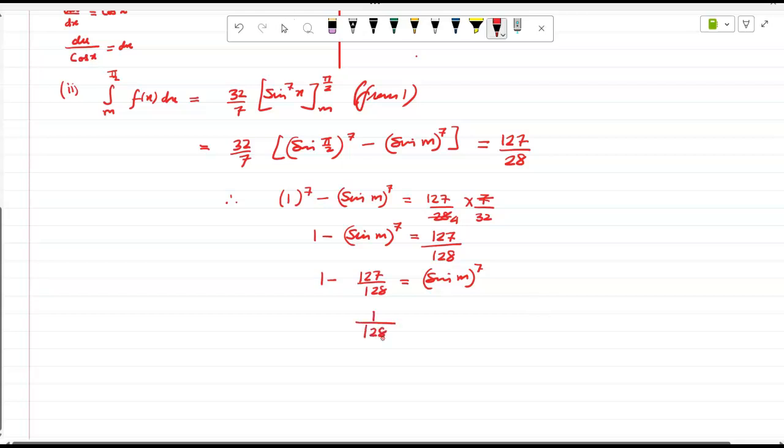Correct, now if you take the LCM, sine m raised to 7, 1 over 2 raised to 7. So sine m is equal to half.